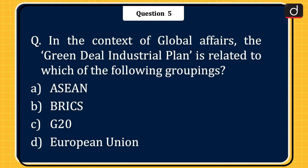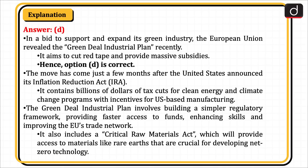Next question: in the context of global affairs, the Green Deal Industrial Plan is related to which of the following groupings? Options: ASEAN, BRICS, G20, or European Union? The correct answer is option D, European Union. In a bid to support and expand its green industry, the European Union revealed the Green Deal Industrial Plan recently. It aims to cut red tape and provide massive subsidies. Hence, option D is correct.